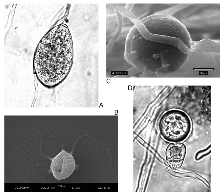Oomycota, or oomycetes, form a distinct phylogenetic lineage of fungus-like eukaryotic microorganisms. They are filamentous, microscopic, absorptive organisms that reproduce both sexually and asexually. Oomycetes occupy both saprophytic and pathogenic lifestyles, and include some of the most notorious pathogens of plants, causing devastating diseases such as late blight of potato and sudden oak death.